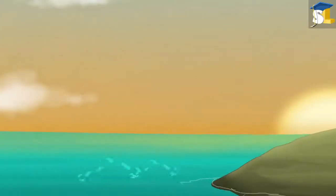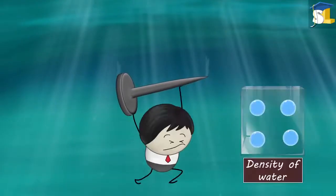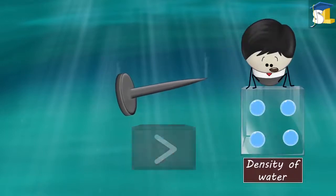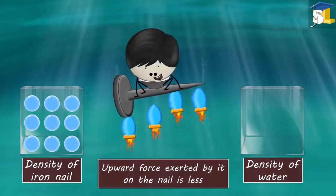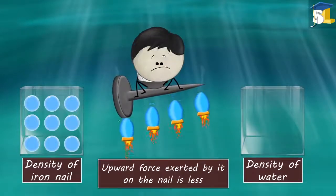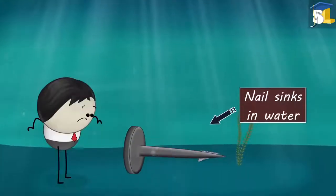In the first case, the iron nail sinks in water because the density of water is comparatively less than the iron nail. As water is less dense, the upward force exerted by it on the nail is less. Hence, the nail sinks in water.